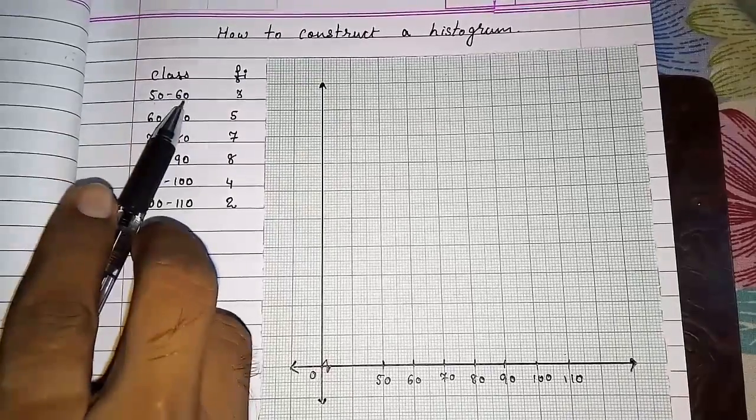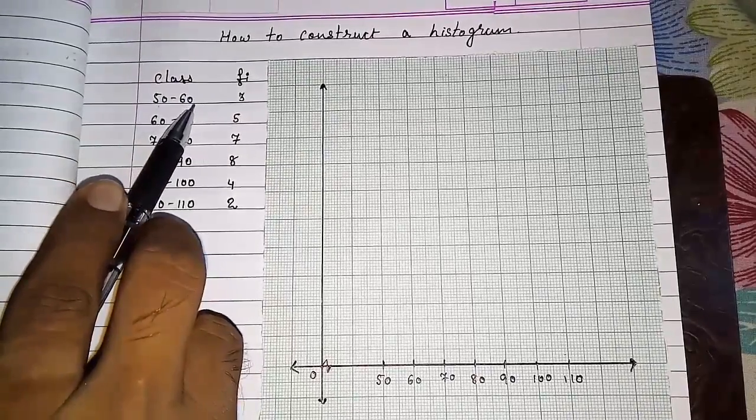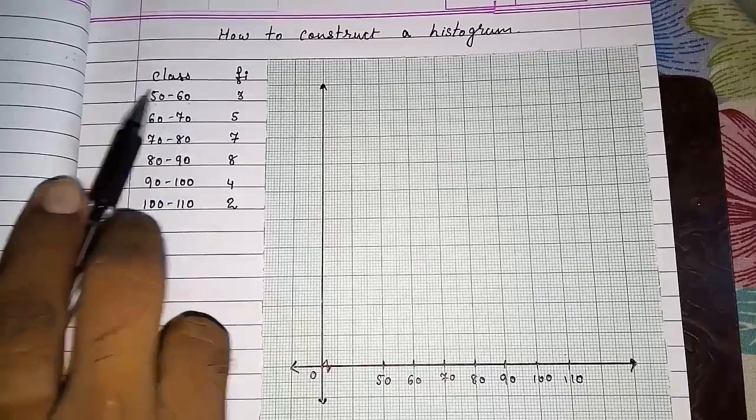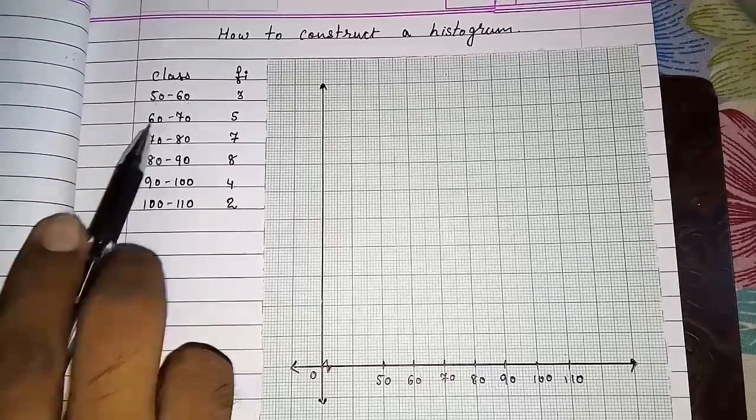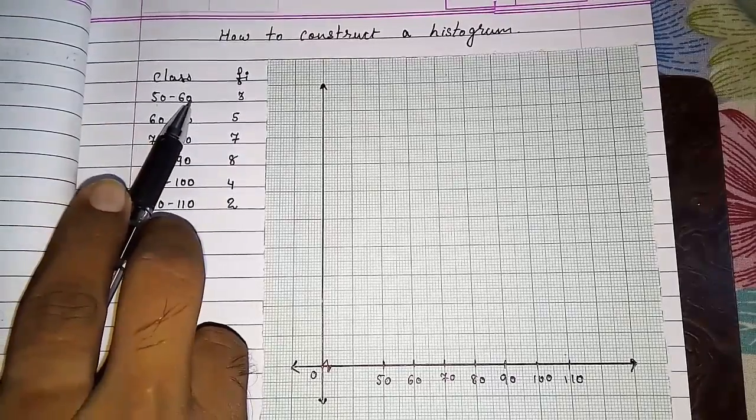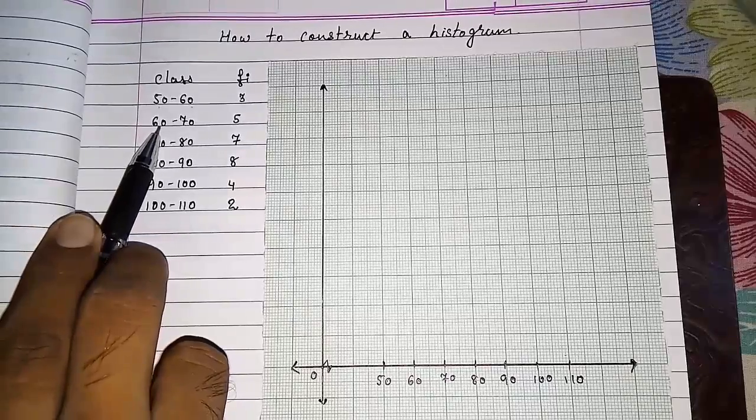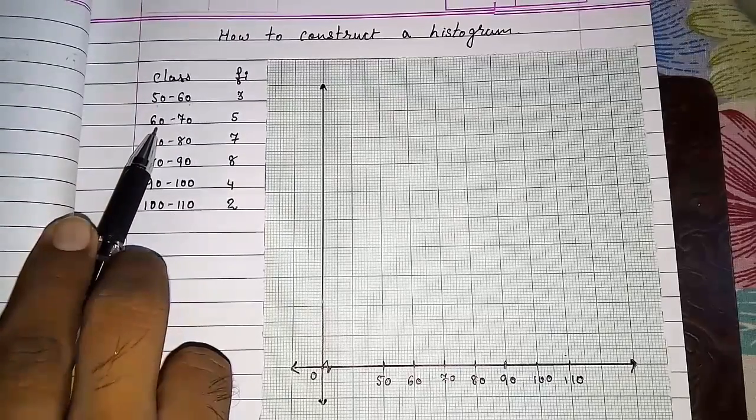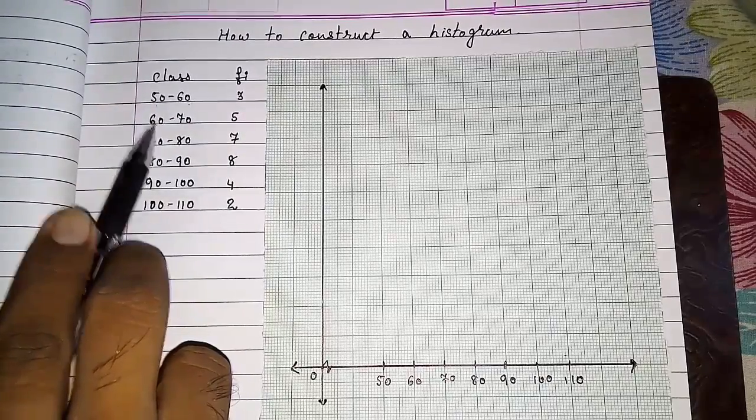Now look, 60 is the ending upper limit or lower limit is 50, and here also the upper limit is 60 and the lower limit is 60. This data is called continuous class.